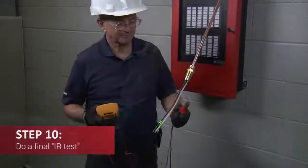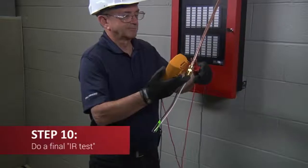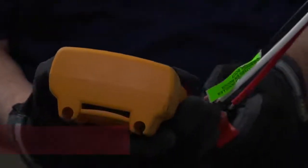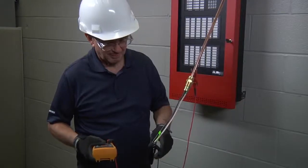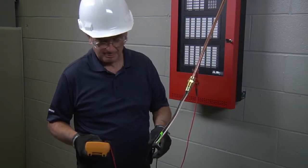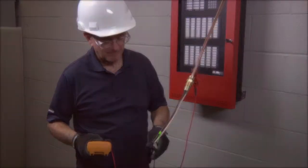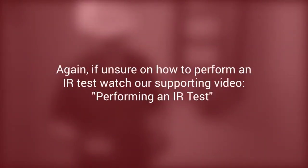To end the termination, test the insulation resistance of the cable once again with the megameter set to 500 volts DC to ensure that the cable has been terminated correctly. Again, if unsure on how to perform an IR test, watch our supporting video, Performing an IR Test.